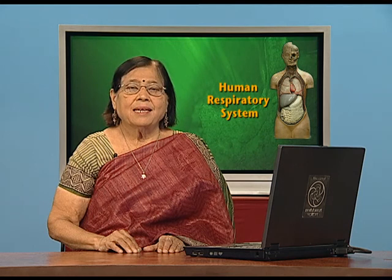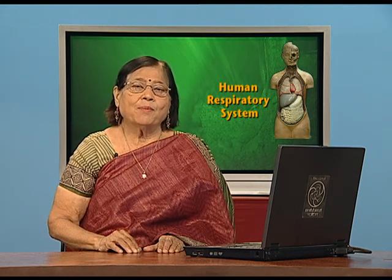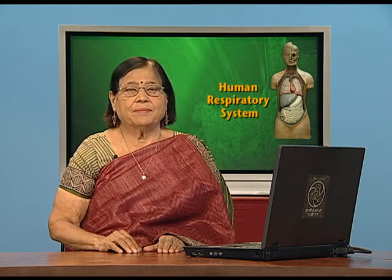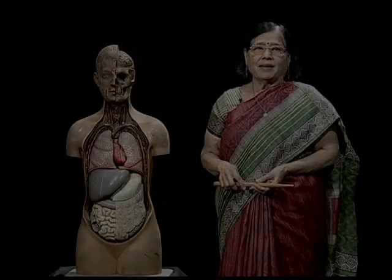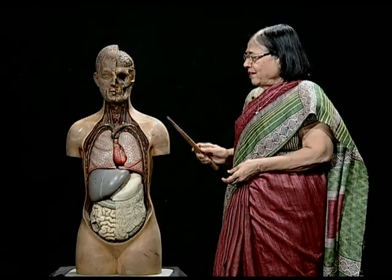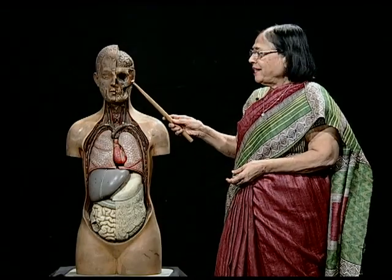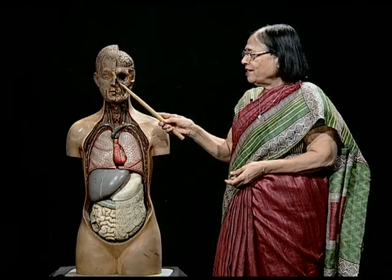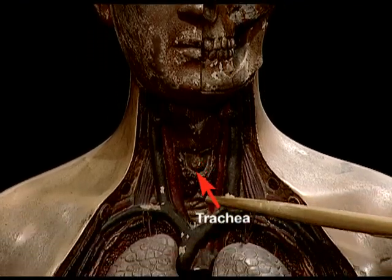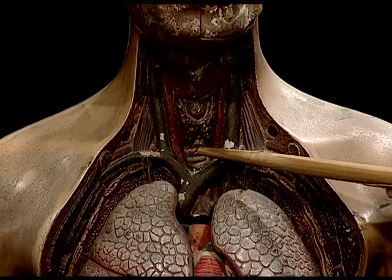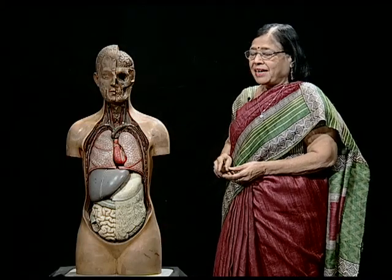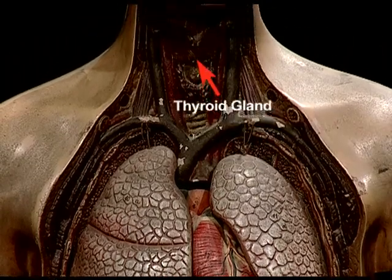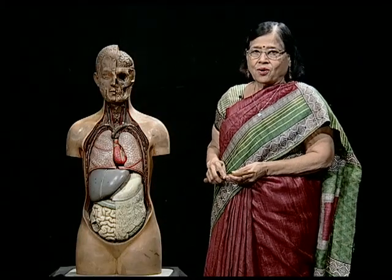That is what we will see in this particular model. Let us now walk up to the model and see the placement of various respiratory organs in our body. We are near the model which will help you in understanding various parts of the respiratory system, which begins with the nose and nostrils. You can then see the trachea, which has cartilaginous rings visible here. On the trachea you can see the thyroid gland, because the thyroid is placed on the trachea.